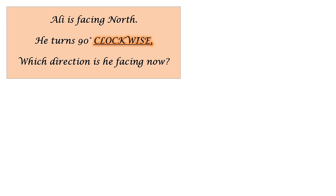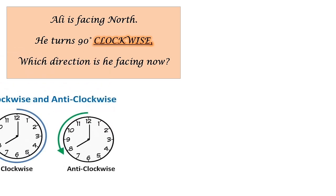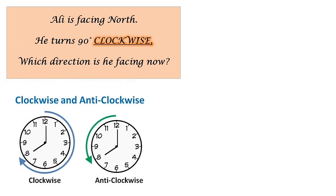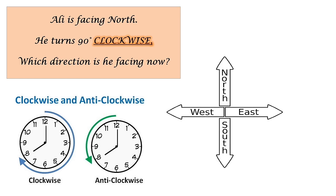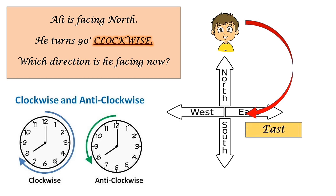Ali is facing north. He turns 90 degrees clockwise. Which direction is he facing now? Don't forget the clockwise direction and the anticlockwise direction. Ali is facing north and he turns 90 degrees clockwise. Clockwise means you move in the same direction of the hands of the clock. A quarter turn, 90 degrees. Which direction is he facing now? That's good.